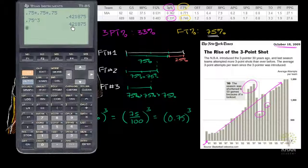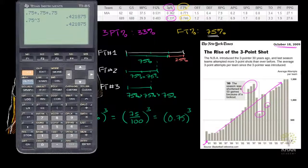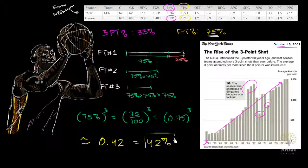Once again, 0.42. So this gets us to approximately 0.42, which is the same thing as 42%. So your probability of making three free throws in a row is 42%, which is still higher than making one three-pointer.